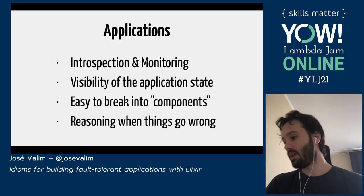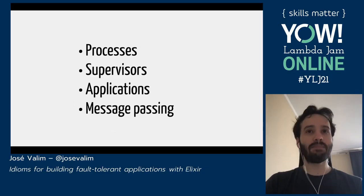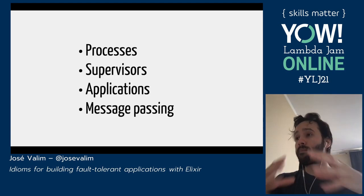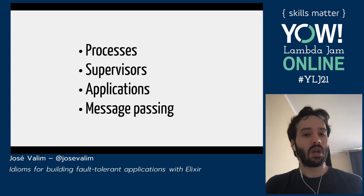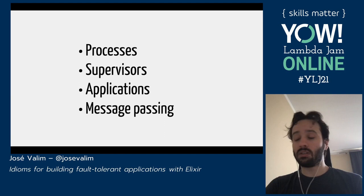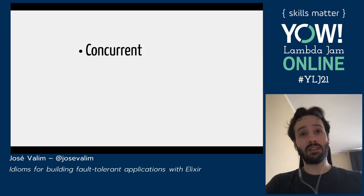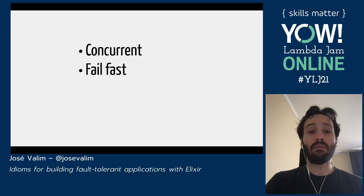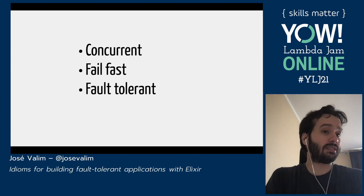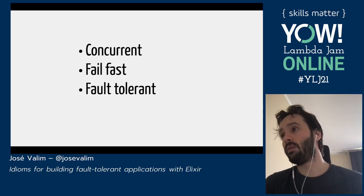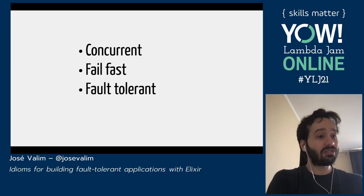We're able to get all those features because we added new words to our vocabulary. We're talking about processes that are lightweight, cheap, and isolated. We're talking about supervisors — particular kinds of processes with the specific responsibility of restarting parts of our code. We're talking about applications and message passing. What we gain is systems that are concurrent, with fault tolerance. If something goes wrong, we're not catching exceptions anymore — it's fine to crash, because a supervisor is going to restart a new version of that process with the initial state that's going to work. We are thinking about systems that can heal themselves.